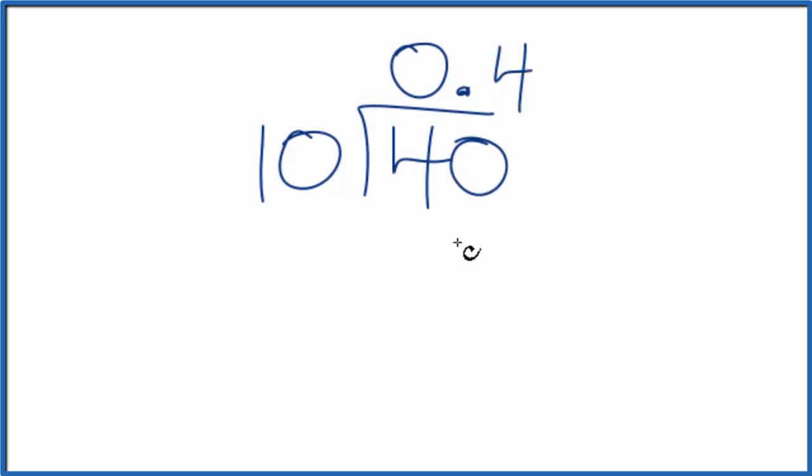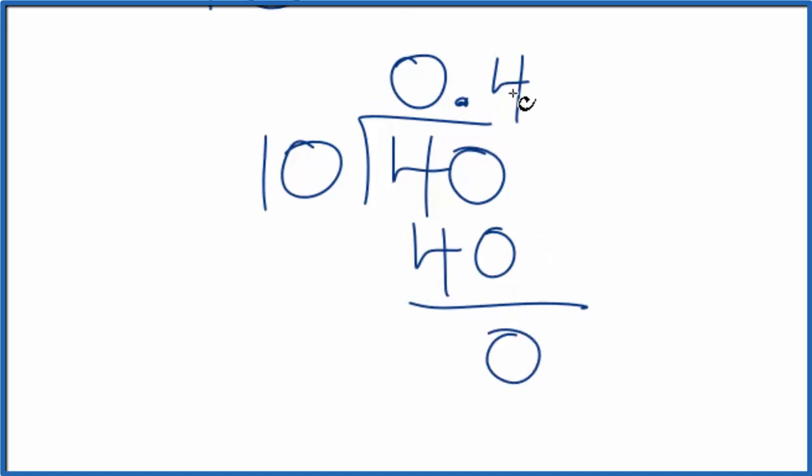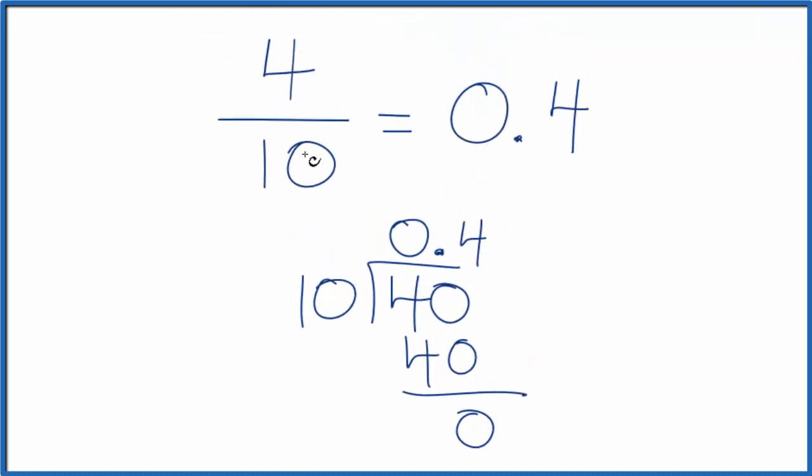Now, 4 times 10, that's 40, zero left over. So 0.4, the decimal, that's equal to the fraction 4 tenths.